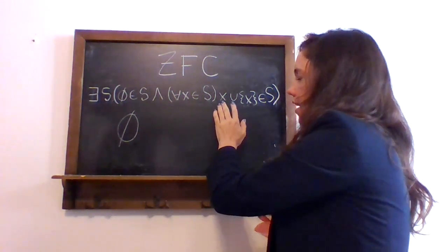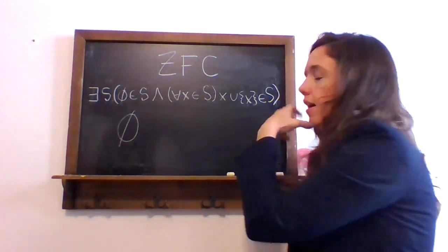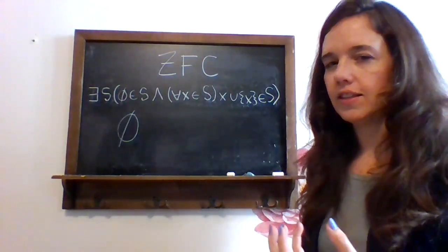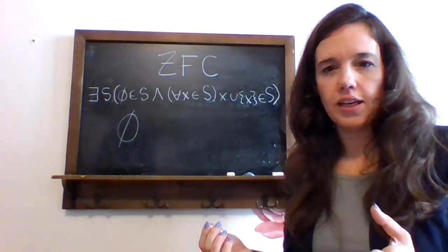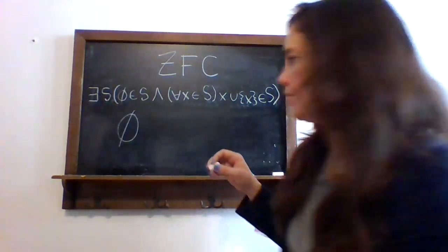So I have a new set. I mean, I have the empty set, and I have another element of S guaranteed that contains all the elements of the empty set - well, there aren't any - and the empty set itself.